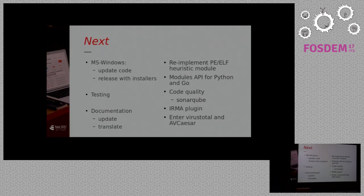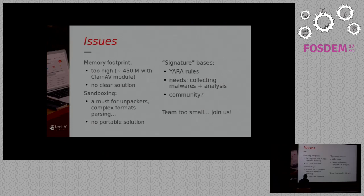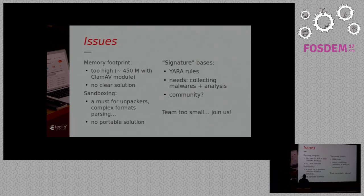There are still some interesting issues. Compared to proprietary antivirus, we have a huge memory footprint problem. Usually a proprietary antivirus has around 100 megabytes memory footprint. We run at approximately 450 megabytes, which is obviously too high. This is highly related to the ClamAV module, and we don't know precisely how to fix it yet — we have some ideas, but the problem is quite complex.